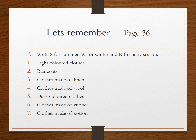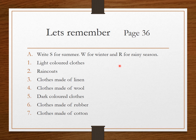On page 36 of the new book there is an exercise. Write S for summer, W for winter, and R for rainy season. I have given you seven questions. You need to write whether each item represents summer, winter, or rainy season clothes — write S, W, or R. Please do it on your own in your books; this is very easy and I'll give you the answers tomorrow.